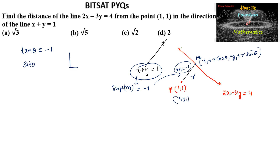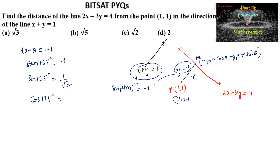This means θ = 135 degrees, since tan135° = −1. So sin135° = sin(90°+45°) = cos45° = 1/√2 (sine is positive in the second quadrant), and cos135° = −1/√2 (cosine is negative in the second quadrant).